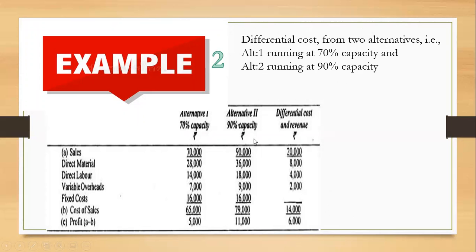Coming to alternative 2, working at 90% capacity, the sales is 90,000 and the cost of sales amounts to rupees 79,000. The difference between both is 11,000. So profit is 11,000 in case of alternative 2, and in case of alternative 1, it is 5,000.